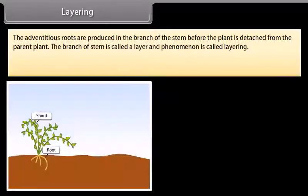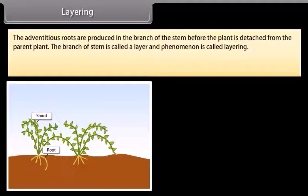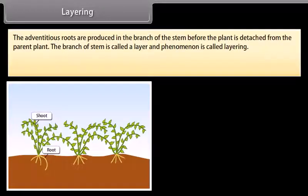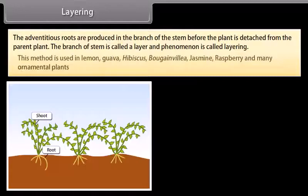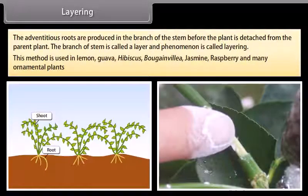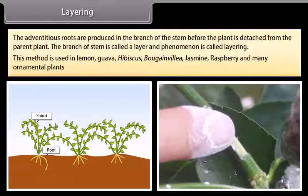In layering, adventitious roots are produced in a branch of the stem before the plant is detached from the parent plant. The branch of stem is called a layer and the phenomenon is called layering. This method is used in lemon, guava, hibiscus, bougainvillea, jasmine, raspberry, and many ornamental plants.